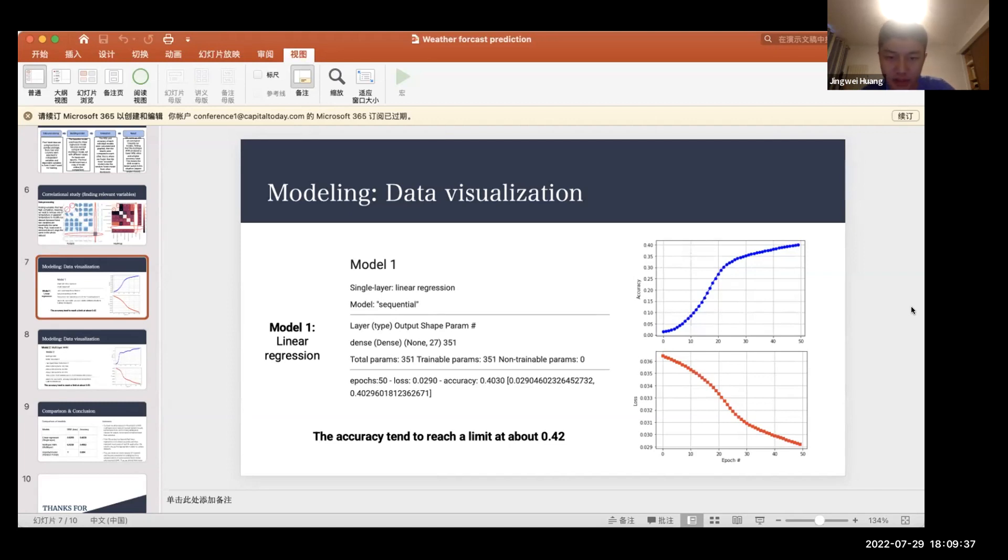And you can see that here, we have only one layer of 27 neurons here, which represents 27 classes. The model finally tends to reach a limit of about 42% accuracy.